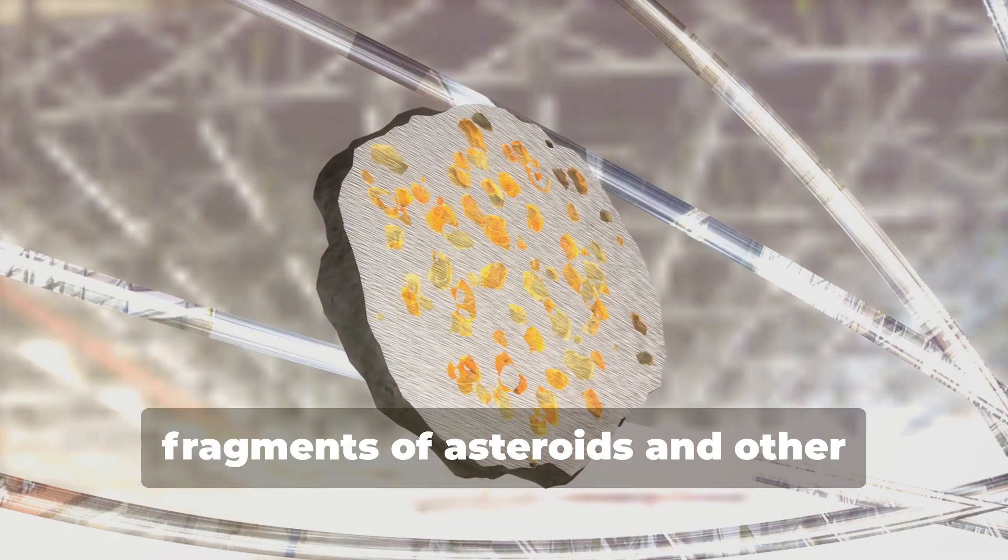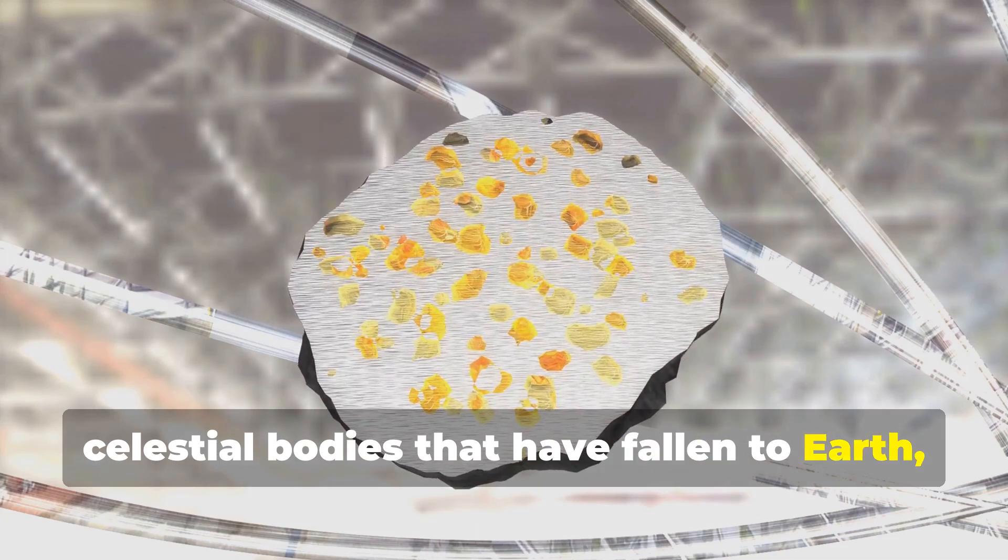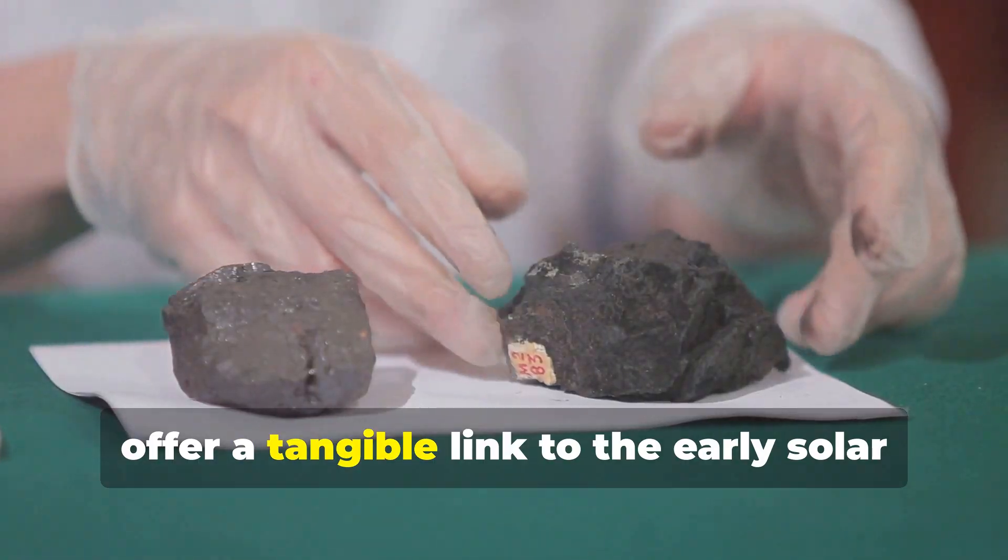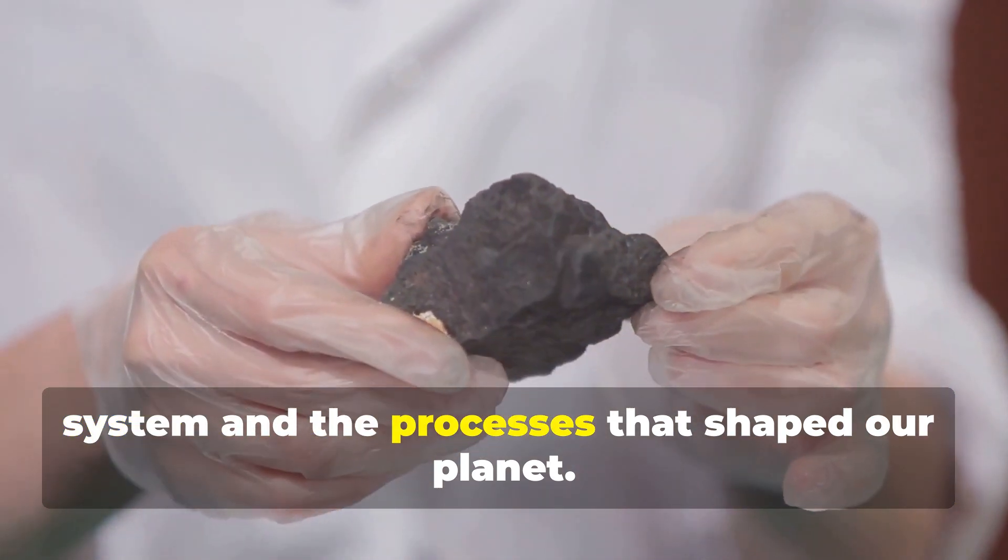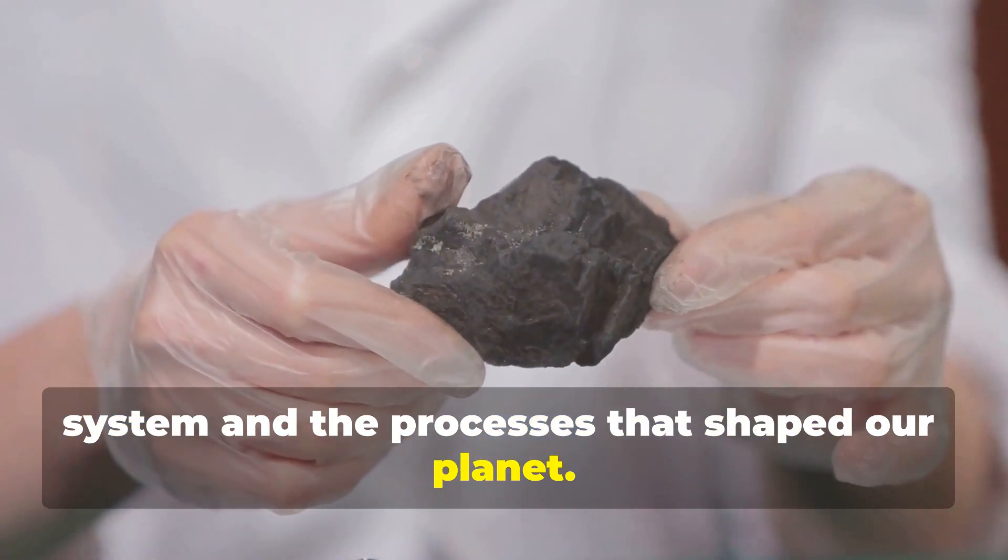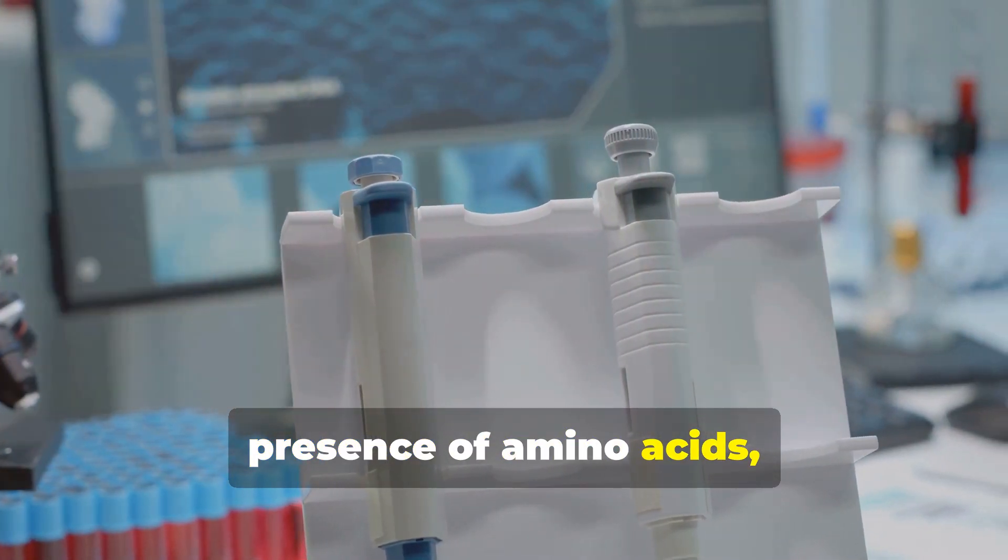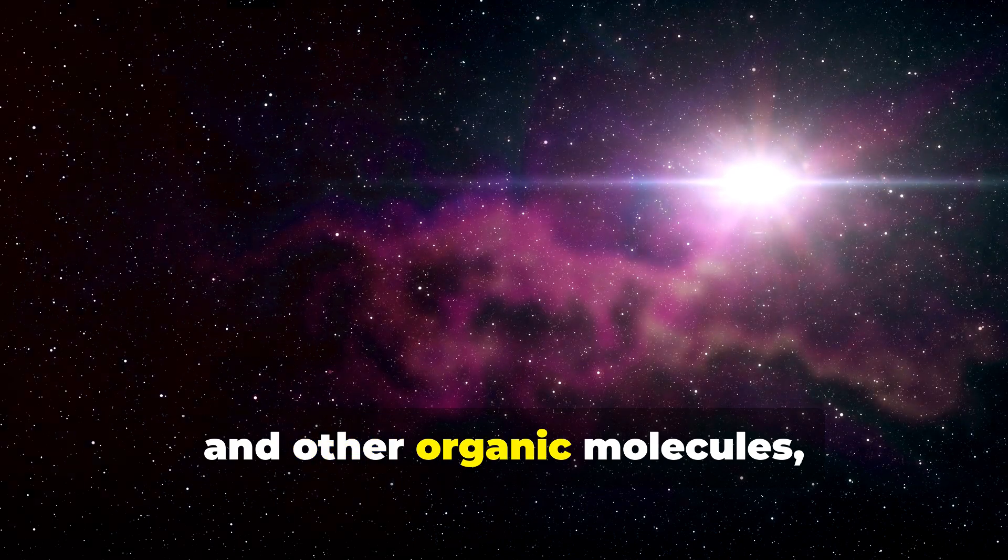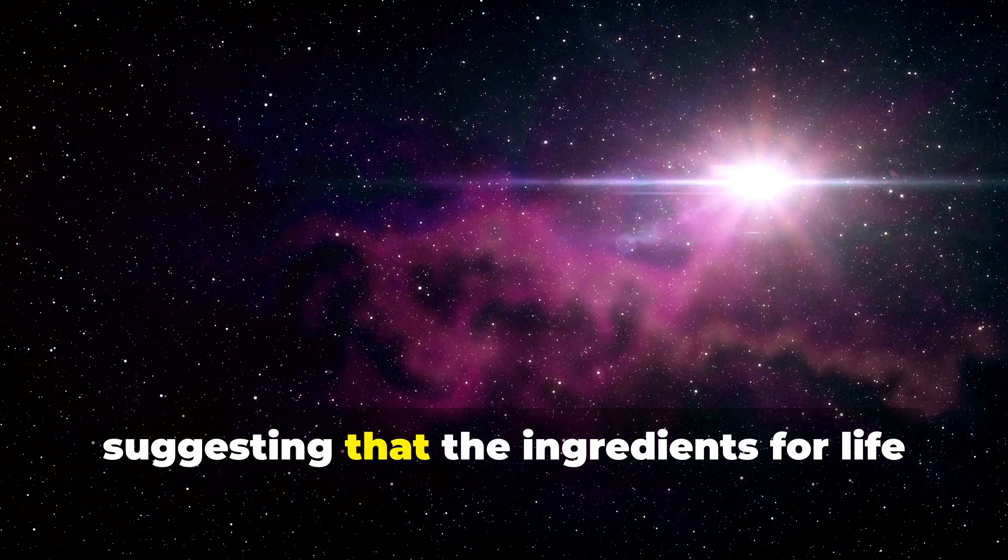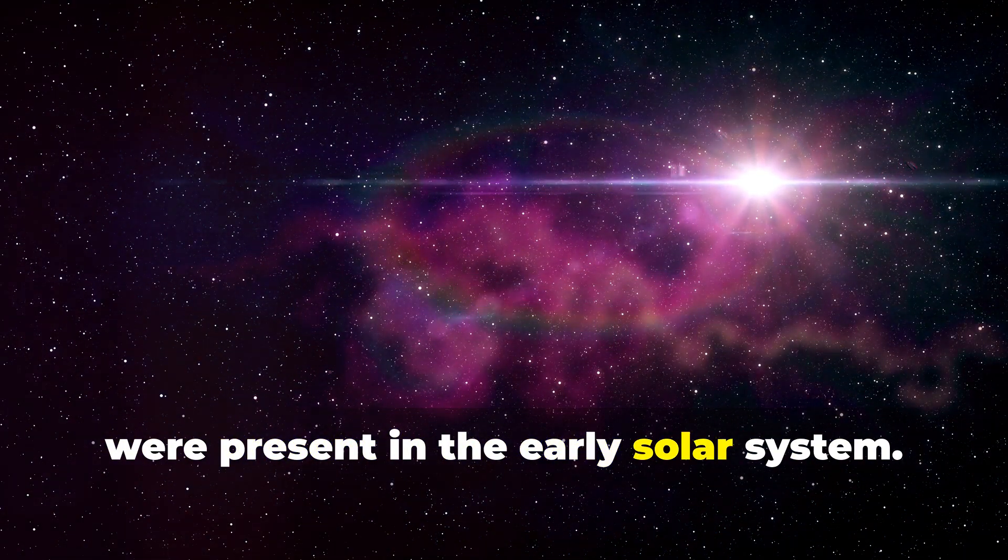Meteorites, fragments of asteroids and other celestial bodies that have fallen to Earth, offer a tangible link to the early solar system and the processes that shaped our planet. Analysis of meteorites has revealed the presence of amino acids, the building blocks of proteins and other organic molecules, suggesting that the ingredients for life were present in the early solar system.